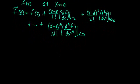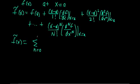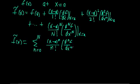One thing I forgot to mention in the last video is that you can neatly summarize all this information in series notation. We can write our Taylor series approximation as the sum, with index n going from 0 up to capital N, of x minus a to the n over n factorial, times the nth derivative of f with respect to x evaluated at x is equal to a.